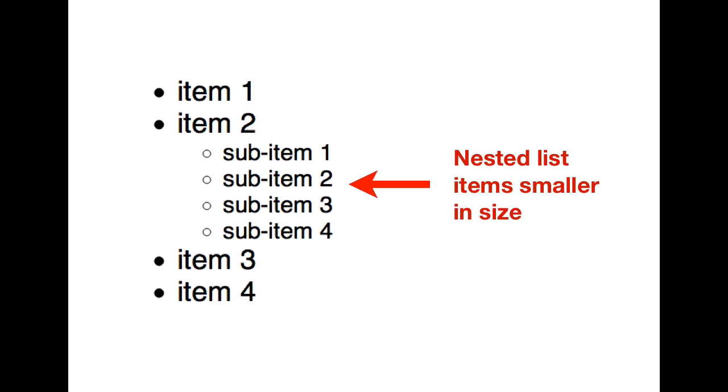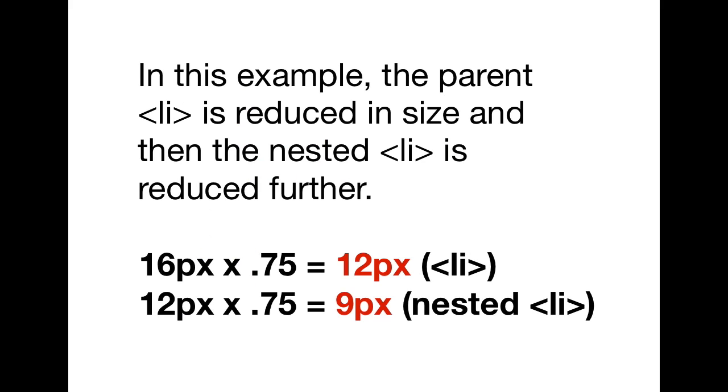This could cause compounding if there are nested li elements. For example, we have a bunch of list items, all li's, and then we have a nested list inside. So we have li's within li's. In this example, the parent li is reduced in size, and then the nested li is reduced even further. We have the first one of 16px times .75 gives us our first li's of 12px. But then if we have nested li's, they'll be 12px times .75, and they'll be 9px in size.